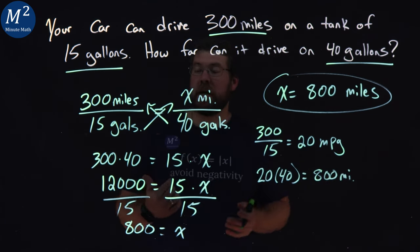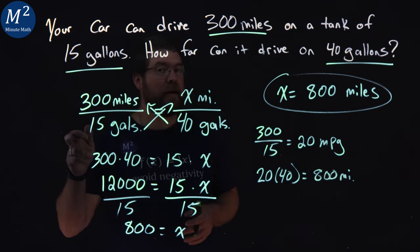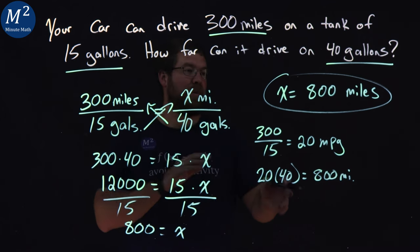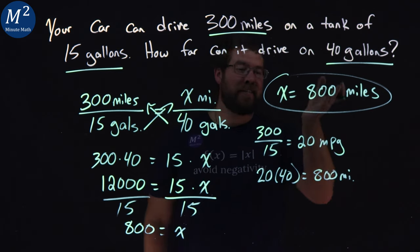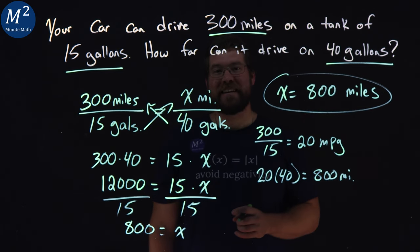So if you accidentally or decided to just calculate the unit rate, that's fine as well. Just multiply by the 40 gallons and you would still get 800 miles. Either way, we can drive 800 miles on 40 gallons.